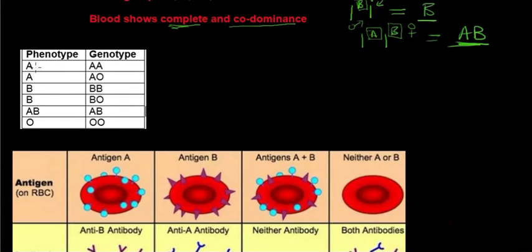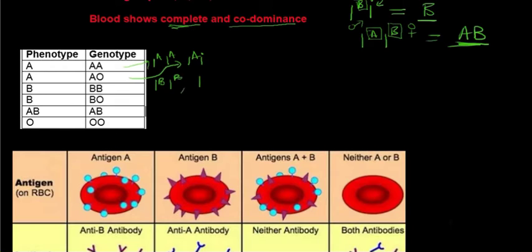Here is a table showing phenotype and genotype. Blood group A can be written as homozygous dominant or heterozygous with a recessive O allele. Blood group B is the same — homozygous or heterozygous with O. Blood group AB shows co-dominance. Blood group O appears as homozygous recessive. The phenotype is simply the blood type the person has.